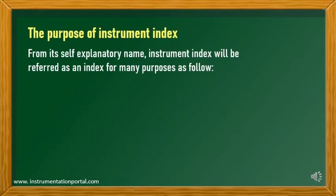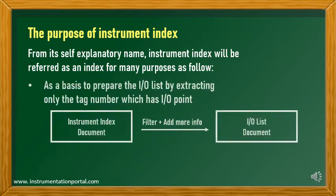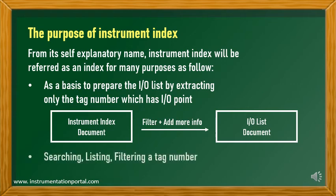From its self-explanatory name, instrument index will be referred to as an index for many purposes, as follows: as a basis to prepare the IO list by extracting only the tag numbers which have IO points, and for searching, listing, and filtering tag numbers.